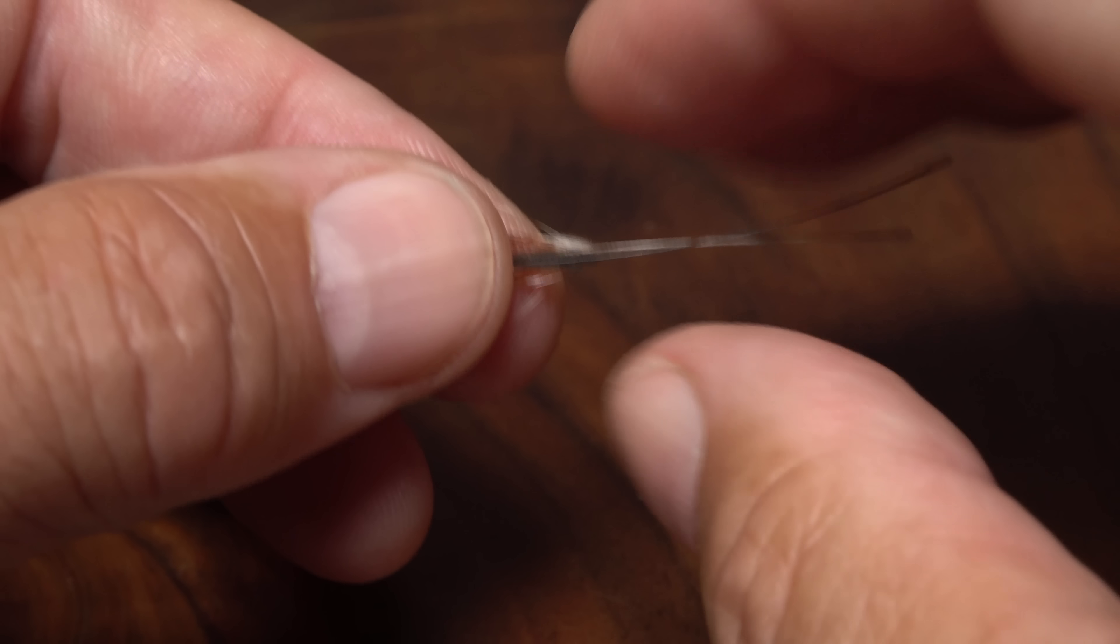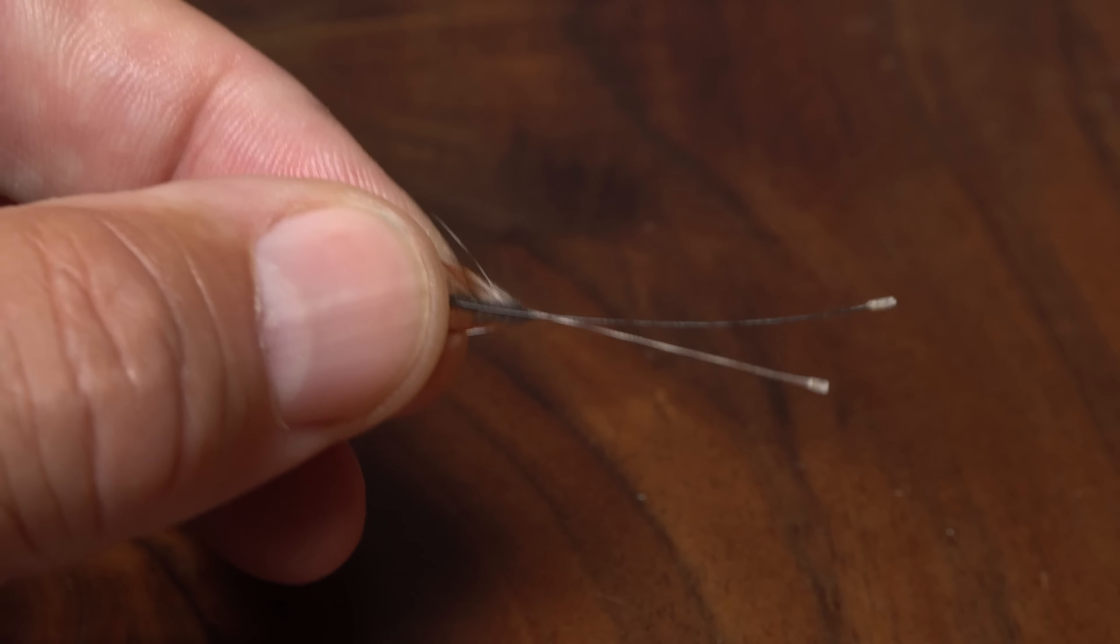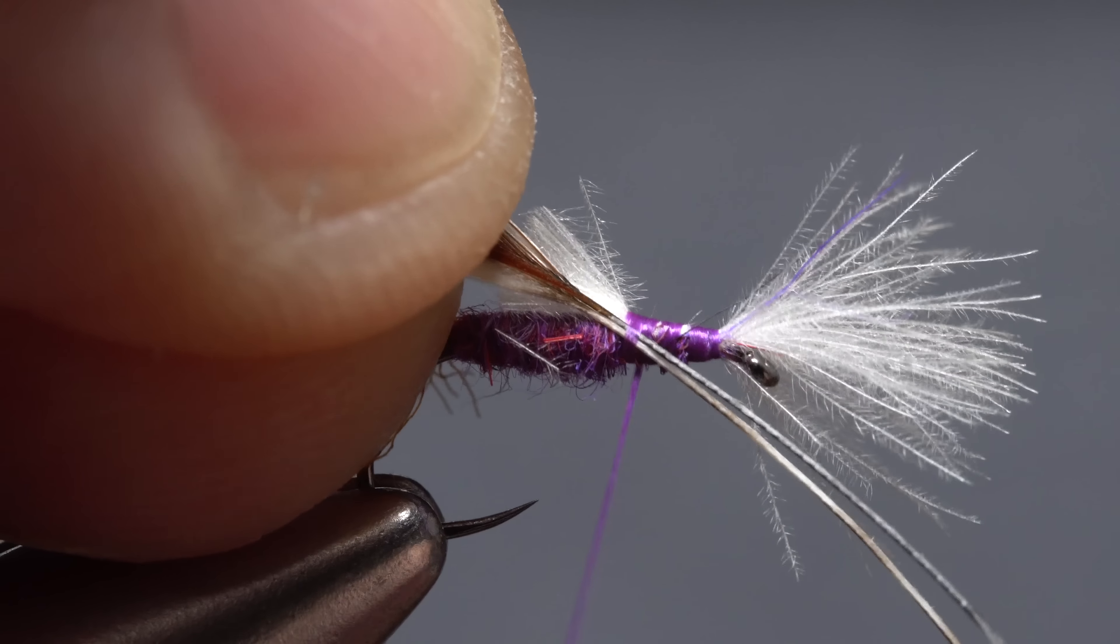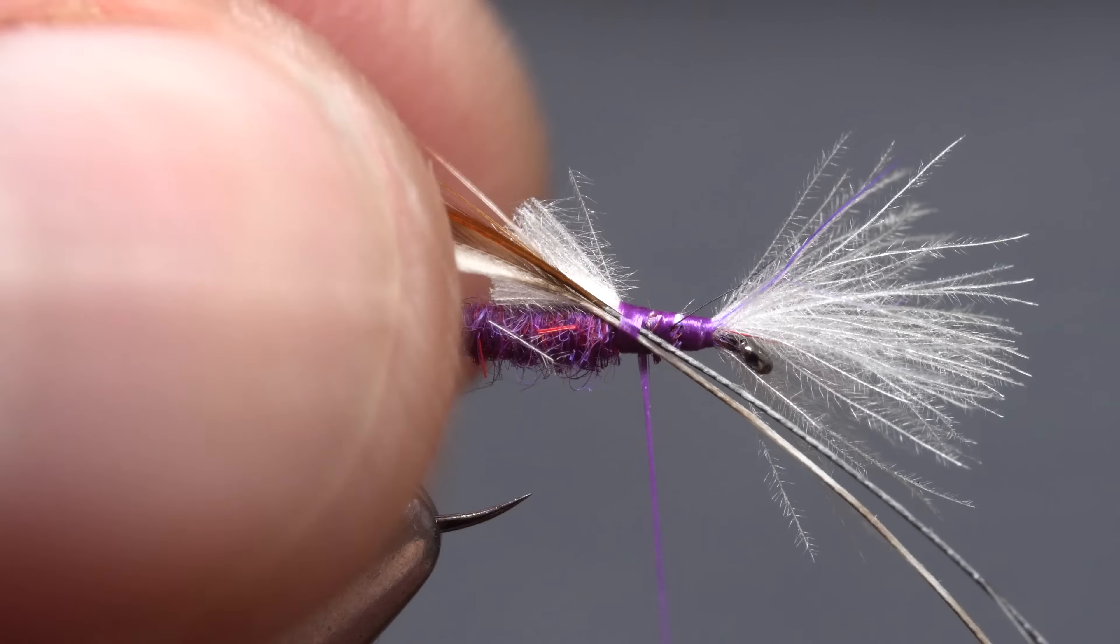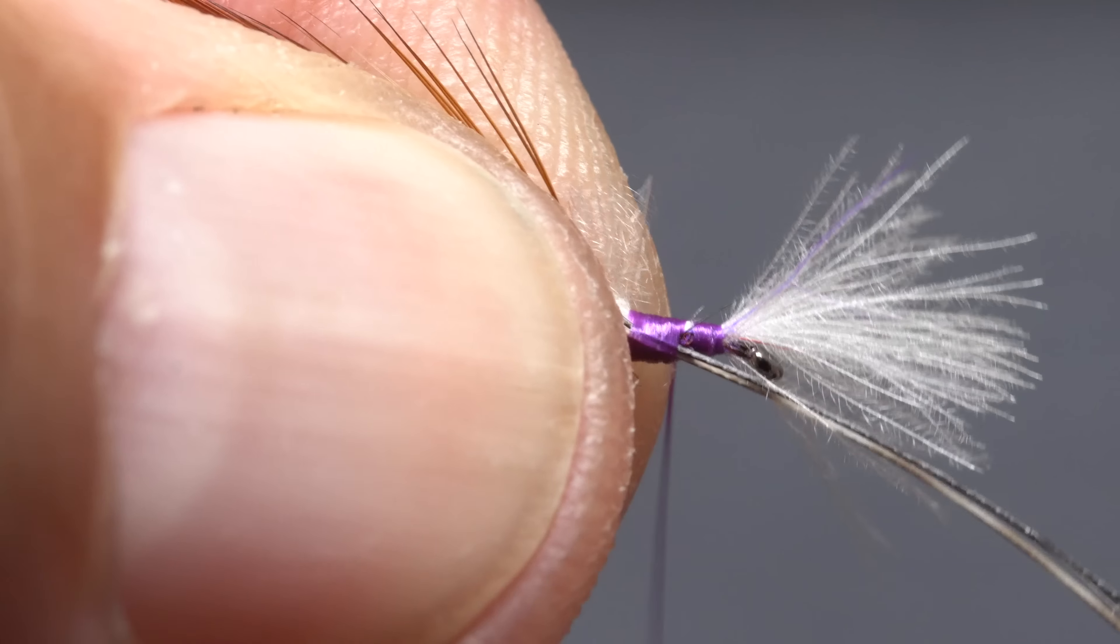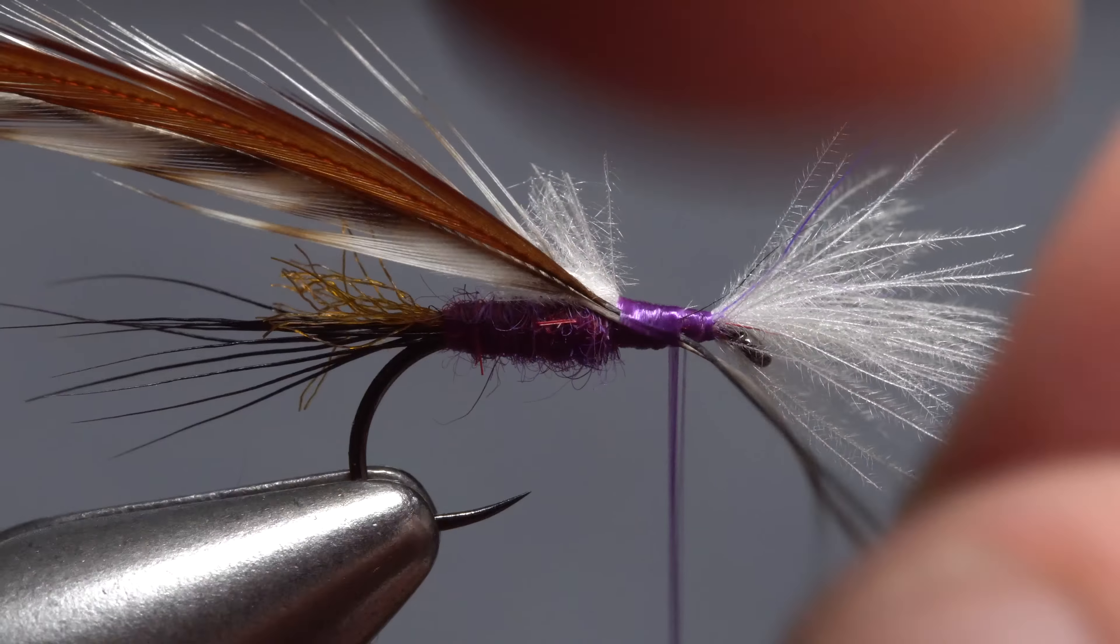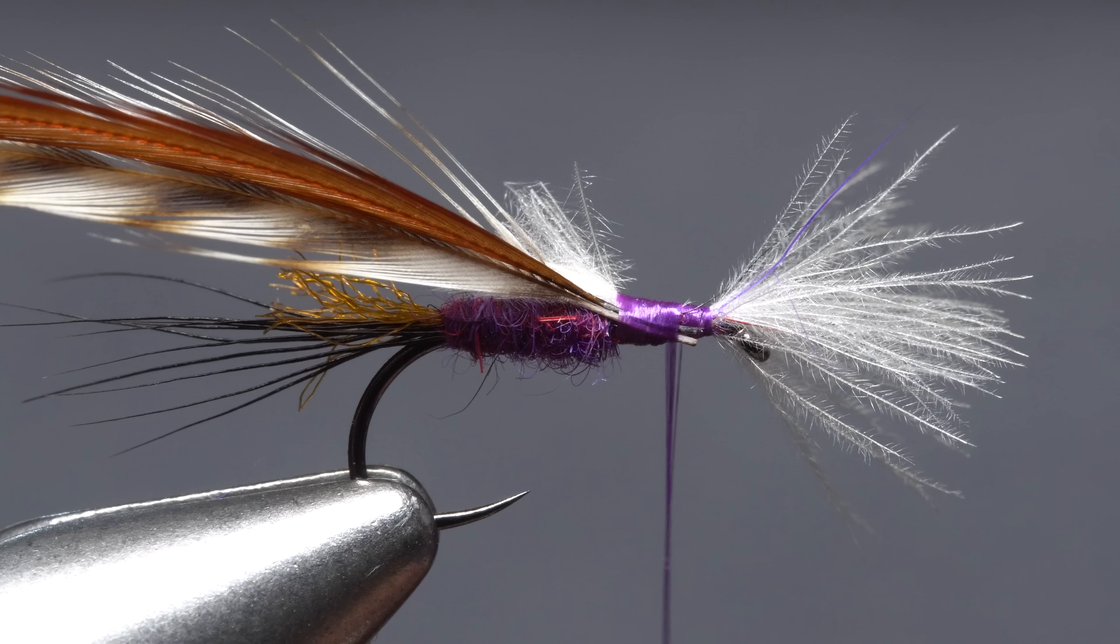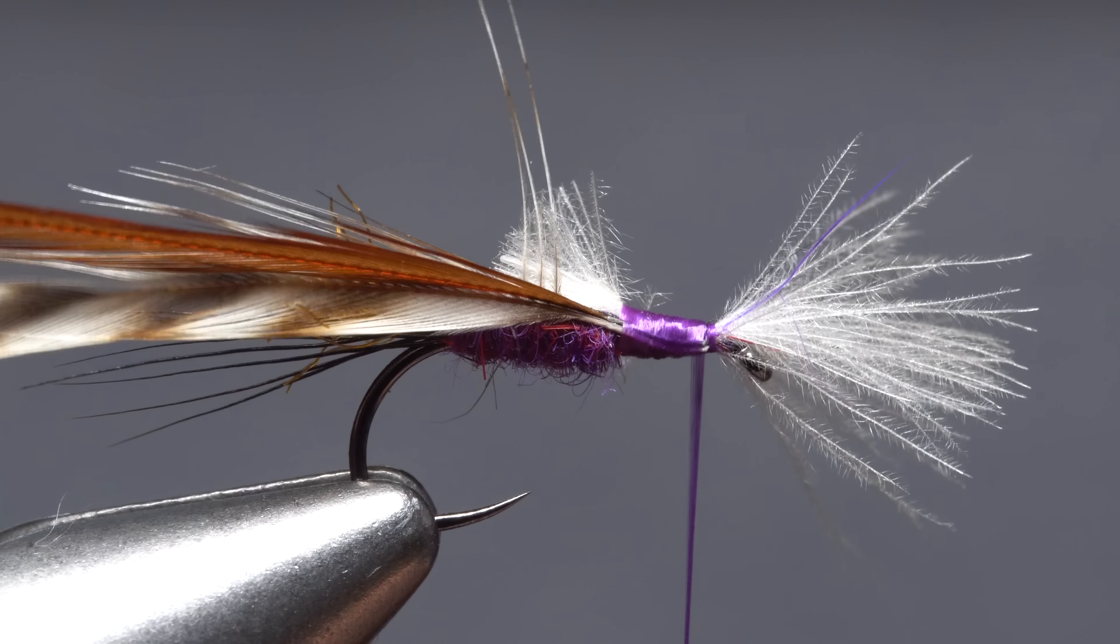With the shiny side of the feathers facing you, align their lower most fibers. Lay the stems against the near side of the hook and take thread wraps to secure them. Make sure they're bound down really well almost to the base of the wing. You can then lift each of these stems up and snip them off close. Take a couple more wraps to cover the butt ends.